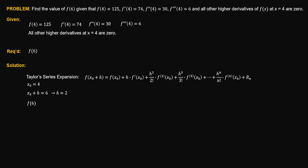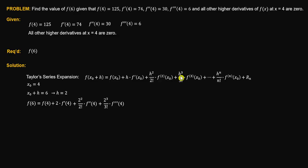Therefore, the function value at 6 using Taylor series expansion may be written as f of 4 plus h times f prime of x sub 0, where h is equal to 2, plus h squared over 2 factorial times the second derivative at x sub 0, plus h cubed — that is 2 cubed — over 3 factorial times the third derivative at x equal to 4. All other higher derivatives at x equal to 4 are 0, so we terminate the Taylor series expansion at this term.